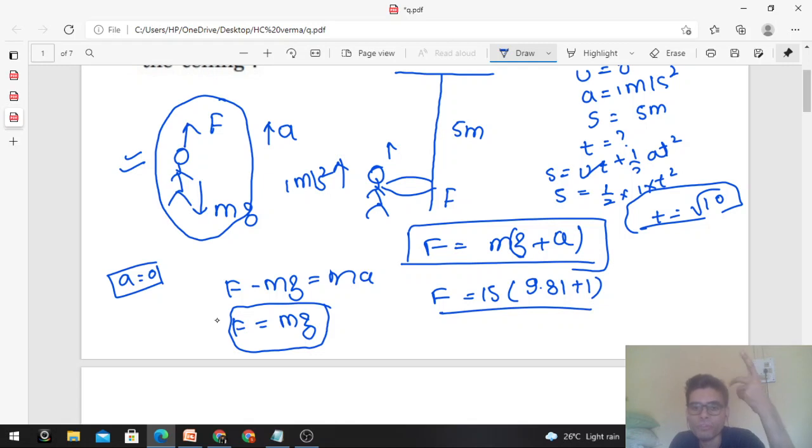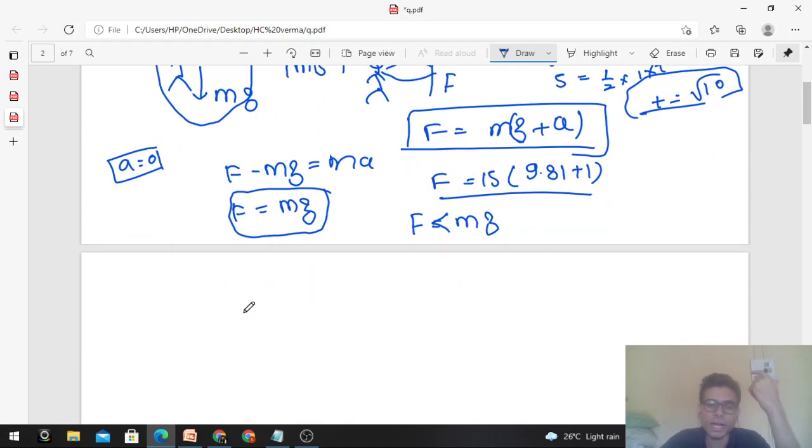If the monkey is accelerating upward at 1 m/s², the force it applies will be greater than its weight. If it wants to remain stationary or move with constant velocity, the force will be equal to its weight.